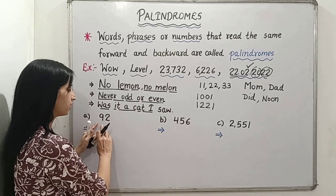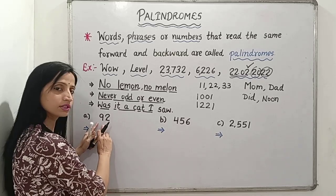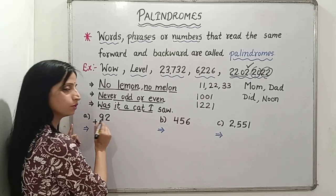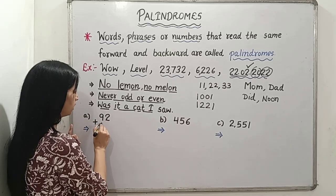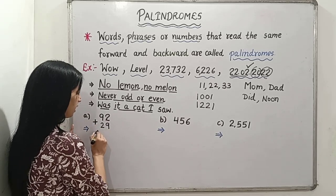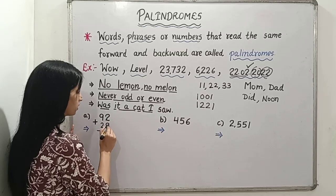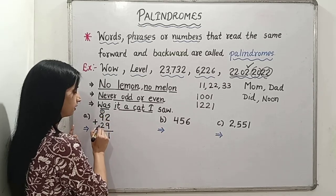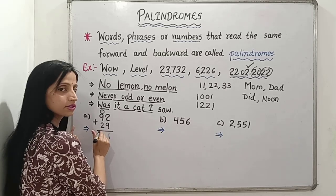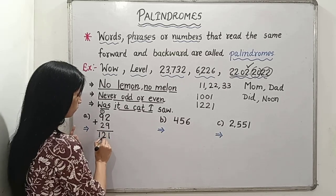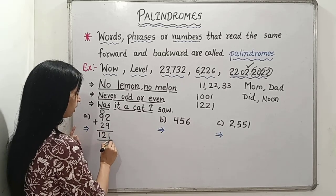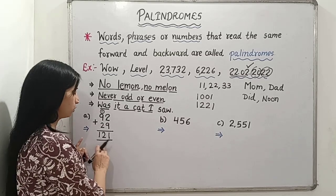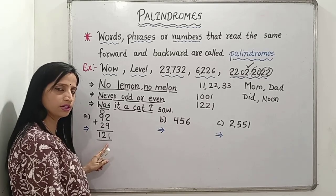Let's take the example 92. This is not a palindromic number because the reverse is 29, which is not the same. So we reverse it — the reverse of 92 is 29 — and we add: 92 plus 29. 2 plus 9 is 11, carry 1; 9 plus 2 is 11, plus 1 is 12. The result is 121. Is it a palindromic number? Yes — 121 is a palindromic number.